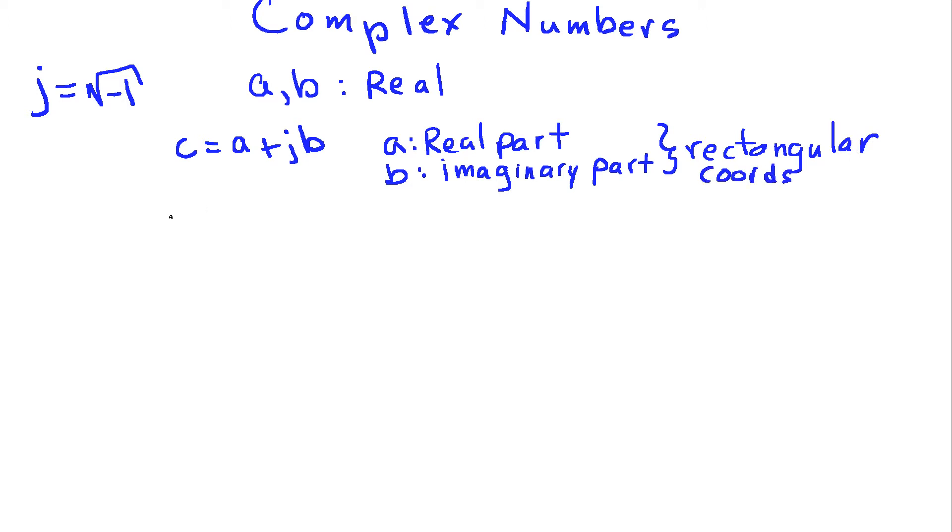The other format that we'll use is to write this complex number in what we call polar form. In that case we'll have c be equal to r times e to the j phi. And in this case, r is the magnitude of the number, and phi is the phase, and this representation is known as polar coordinates.